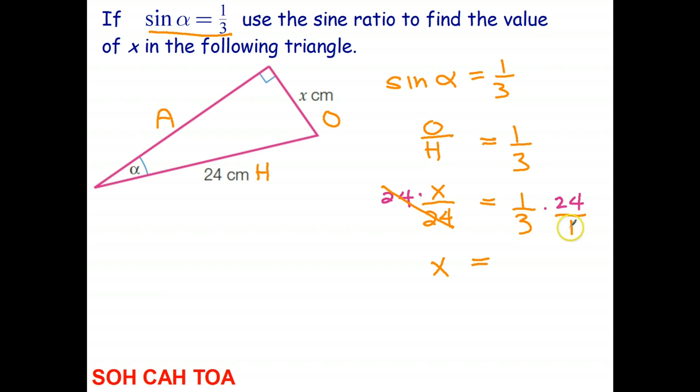And a reminder, 24 is 24 over 1. 1 times 24 is 24. 3 times 1 is 3. And we get our answer, 24 over 3, which is 8. 8 and the units are centimeters.